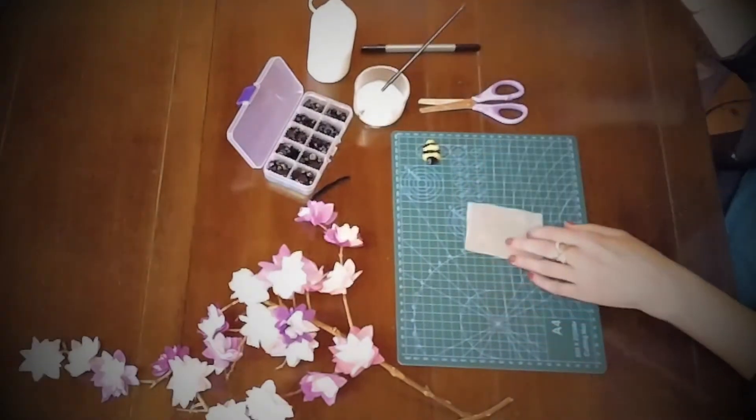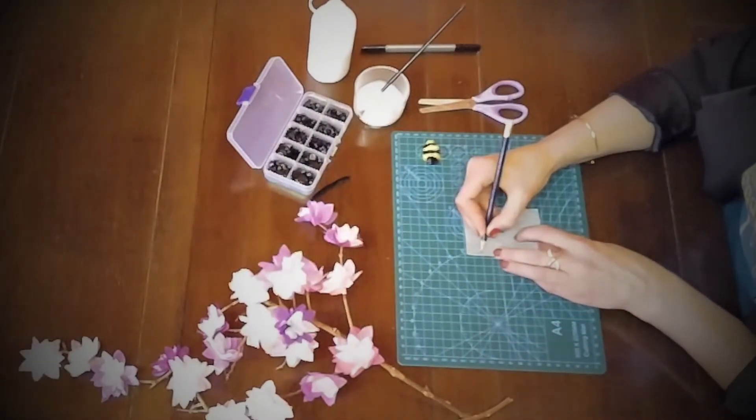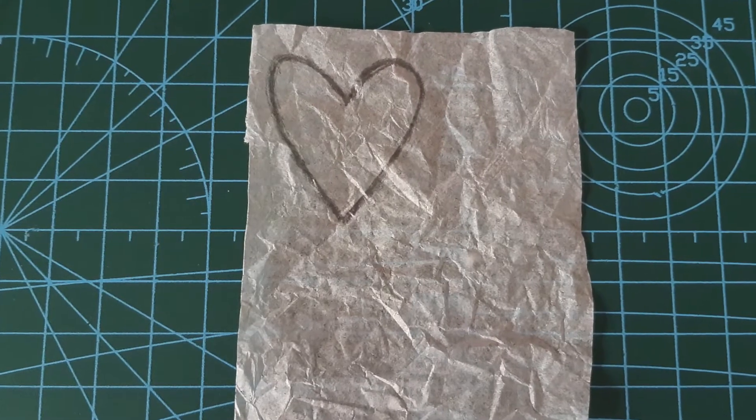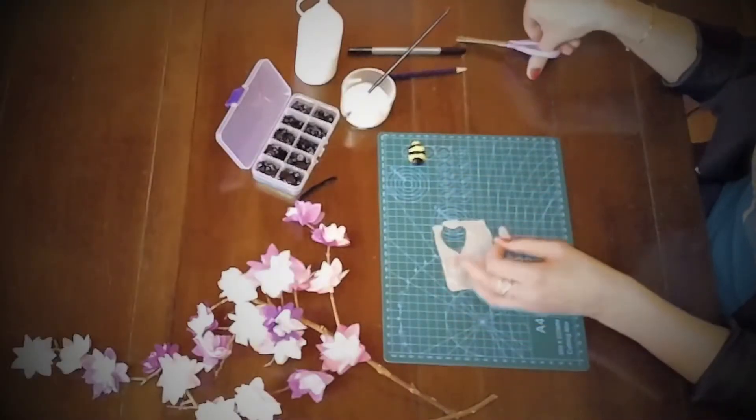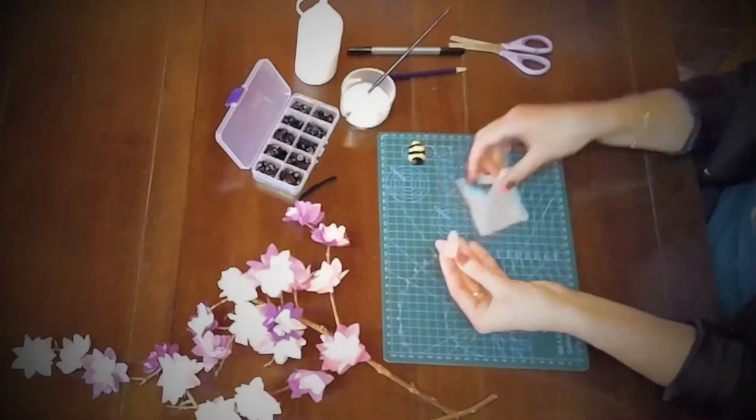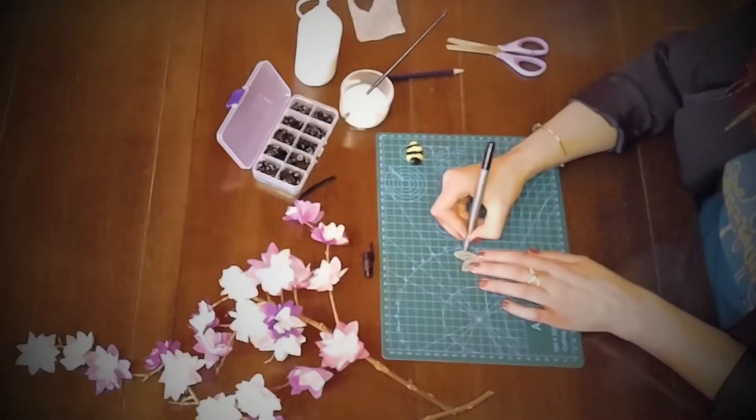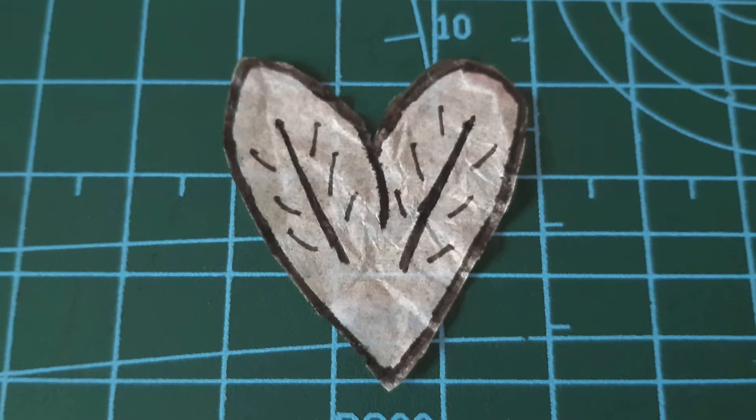To make the wings take a small piece of white tissue paper and draw an outline of some wings. Think of drawing a heart shape. Cut them out then using a black fine line pen draw around the edge of the wings and finish by drawing some lines on each wing to enhance them.